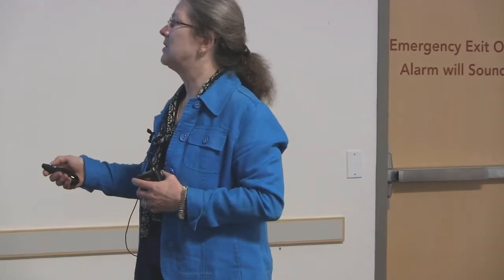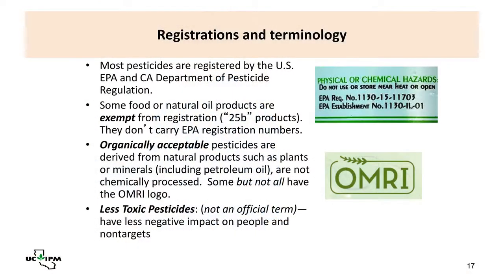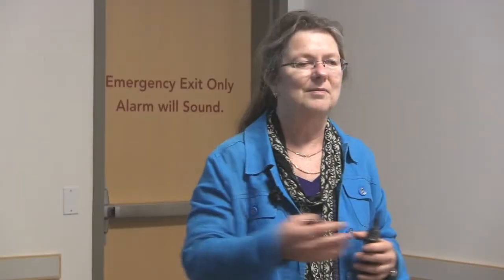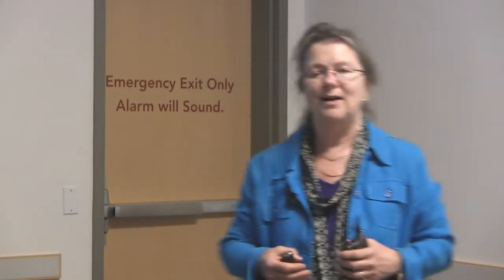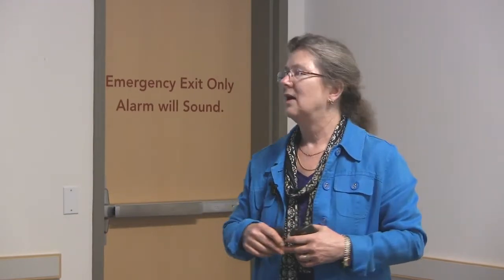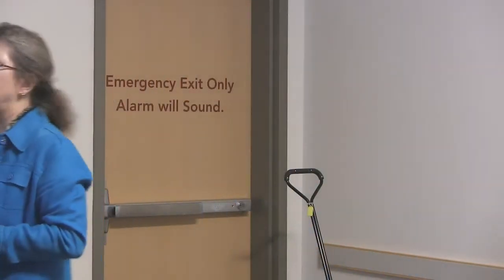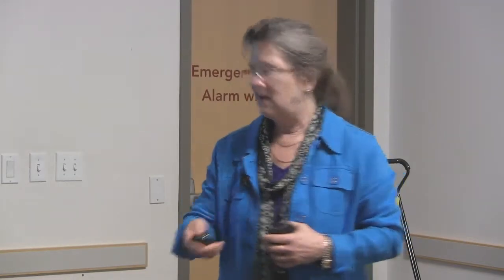Over the last decade or so, there's been a category of new products — food or natural oil products — that are exempt from registration because they're actually food-grade materials. These are called 25B products. They usually contain things like rosemary oil, clove oil, or garlic — things you could imagine putting on your salad. They are not registered pesticides, but they look like pesticide products and are used to suppress pests. We don't know a lot about the efficacy of some of these products, but they appear to have at least short-term efficacy on some pests.